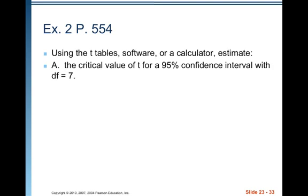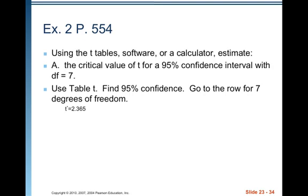The easiest thing is to use Table T — it's in your resource packet, the bright pink one, or in the back of your book. Find 95% confidence, then go to the row for 7 degrees of freedom, and there you'll see that T* is 2.365.